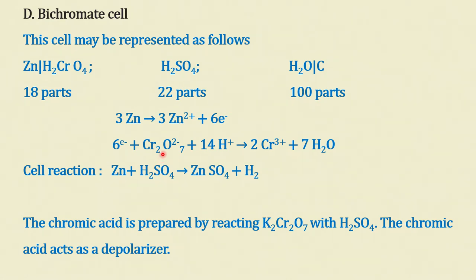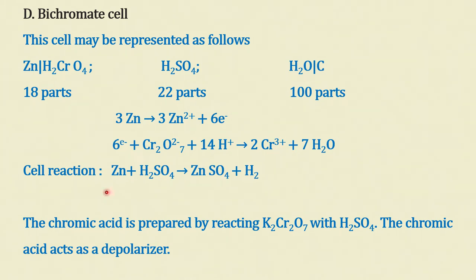The bichromate cell uses zinc, chromic acid, H₂SO₄, and water, with a carbon electrode and zinc electrode. The proportions are 18 parts, 22 parts, and 100 parts respectively. The anode reaction is Zn → Zn²⁺ + 2e⁻; three zinc ions produce 6 electrons required for potassium dichromate to produce Cr³⁺. The overall cell reaction is Zn + H₂SO₄ → ZnSO₄. Chromic acid is prepared by reacting potassium dichromate with H₂SO₄, and here chromic acid acts as a depolarizer instead of nitric acid.